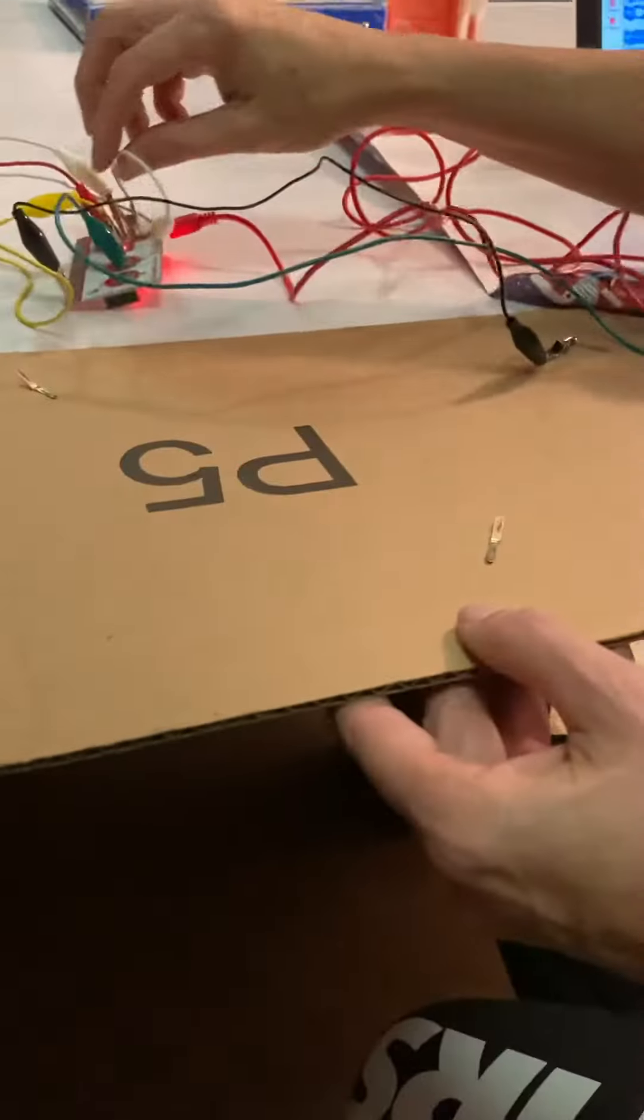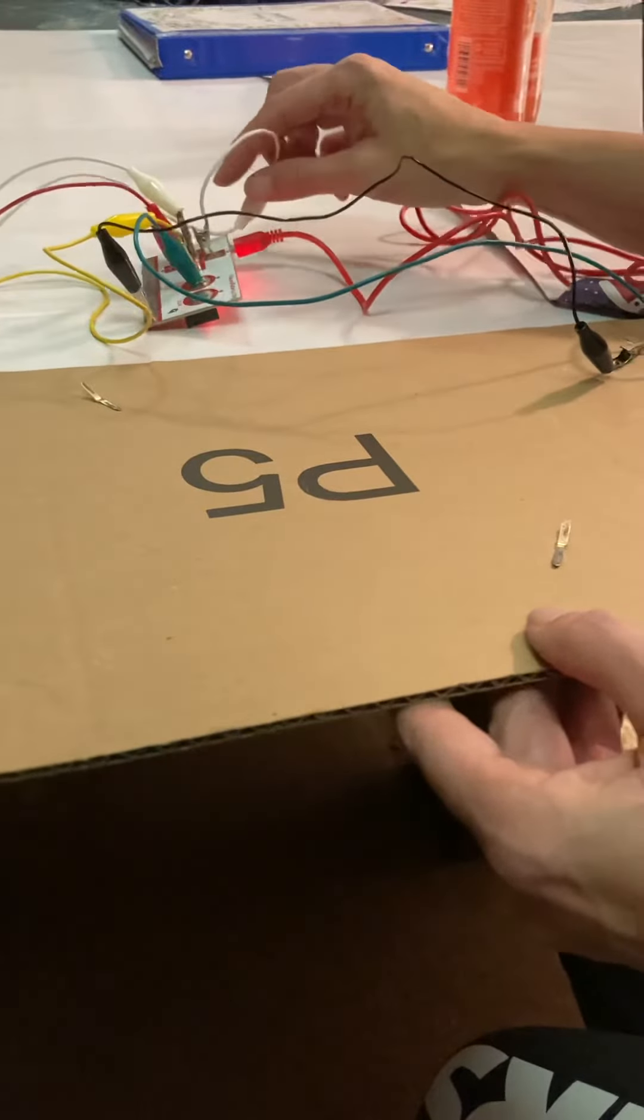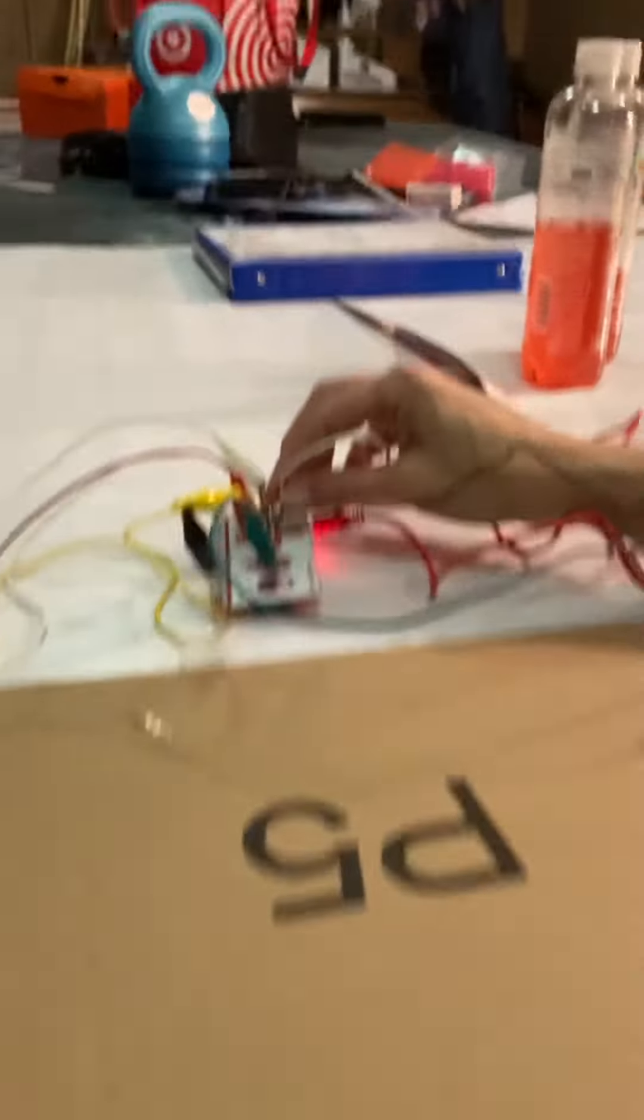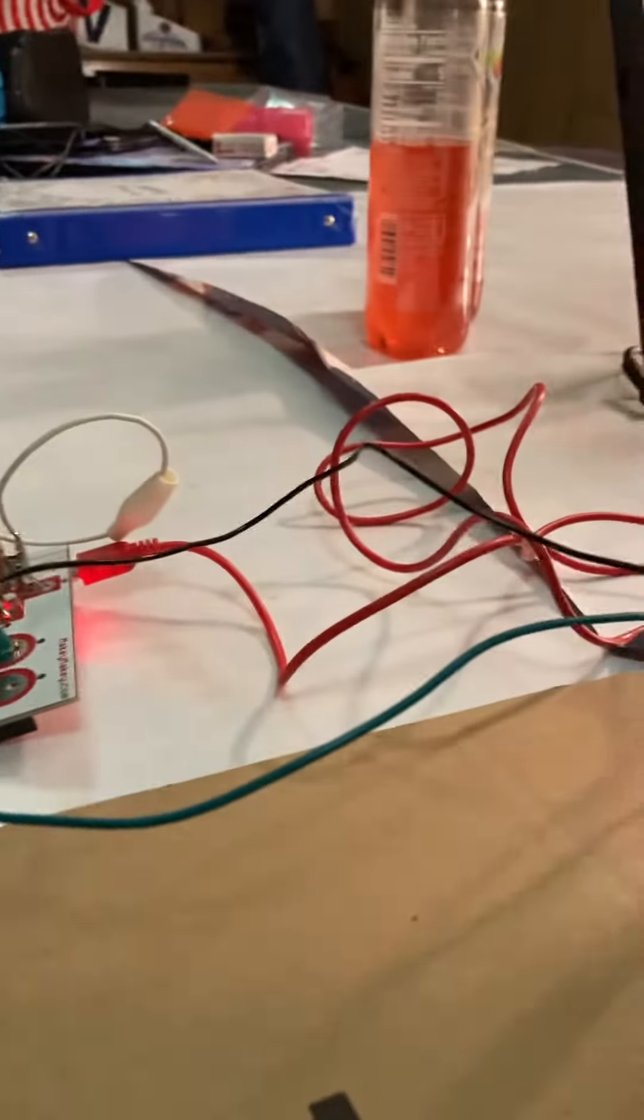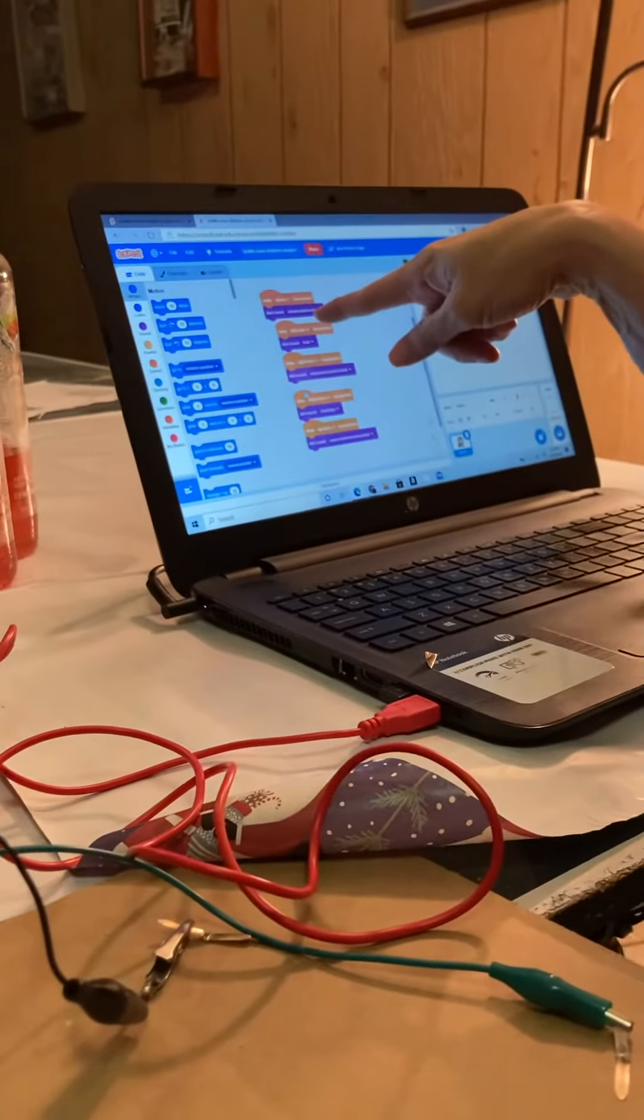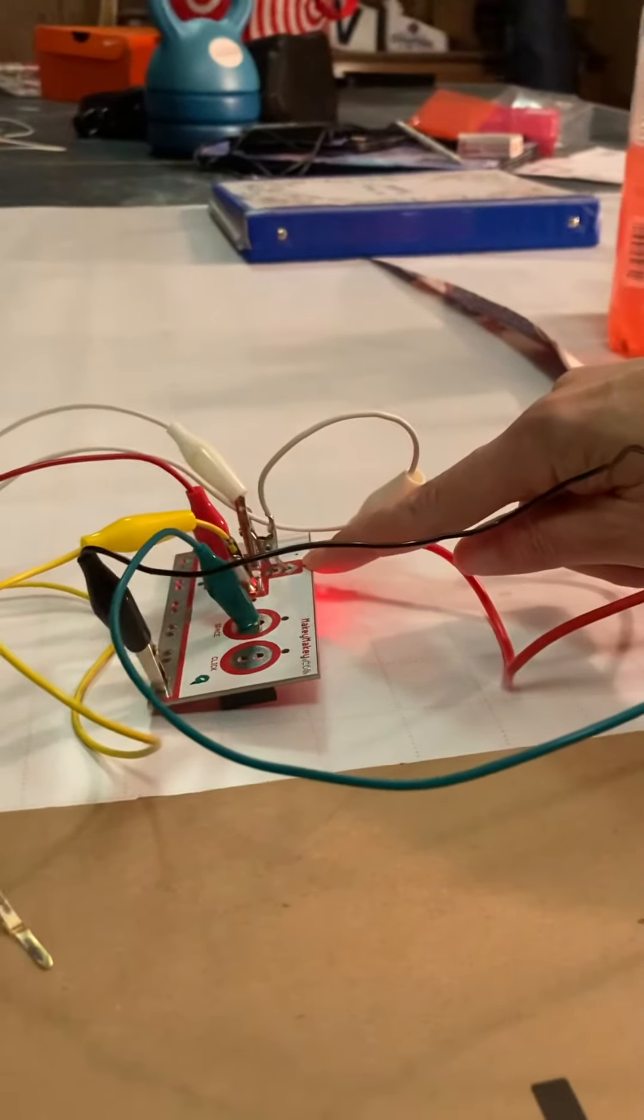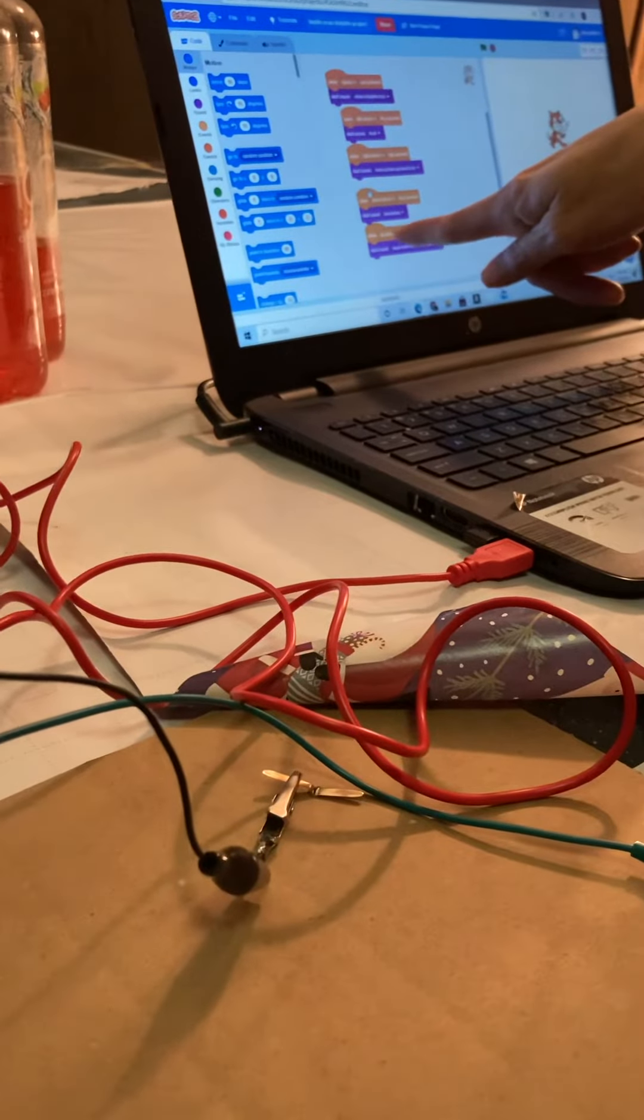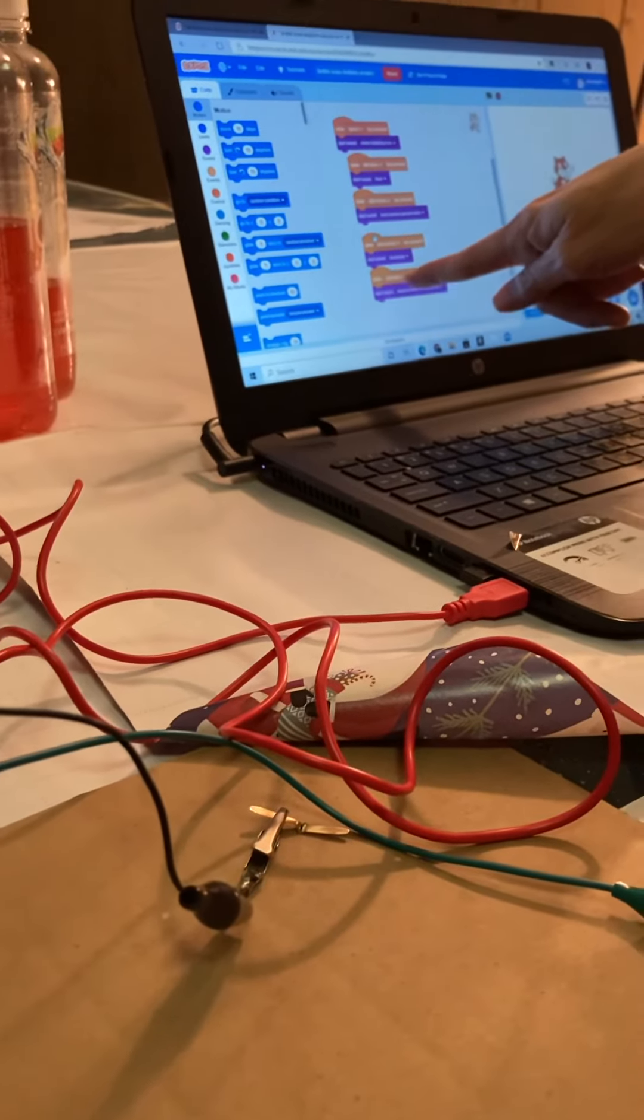The other problem people commonly face is they have their alligator clip plugged into an arrow, but they don't have the right arrow listed with what they want to have said. So if you have something plugged into the up arrow, make sure the phrase you want it to say has the direction set to up arrow.